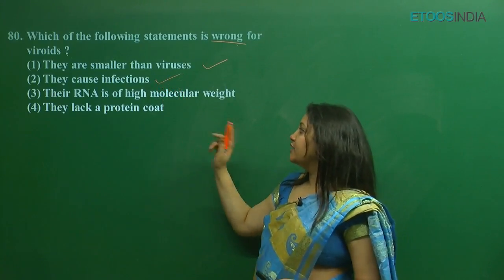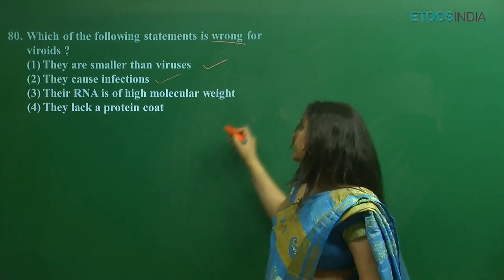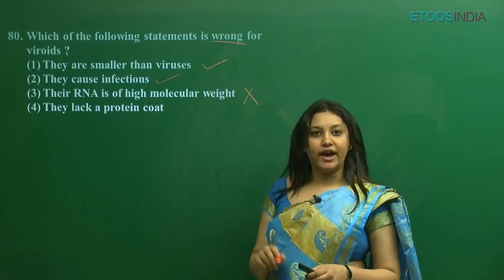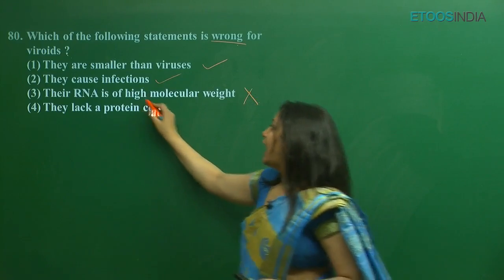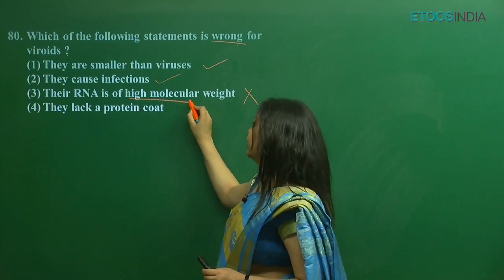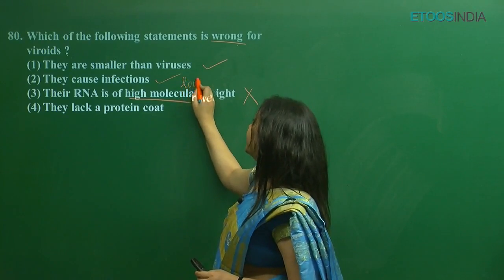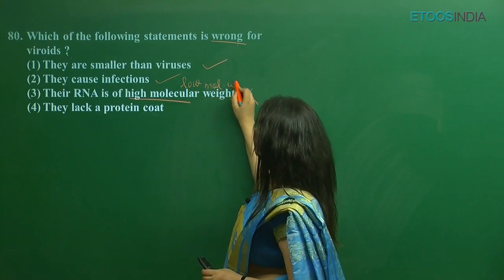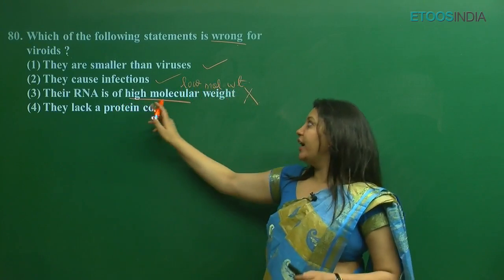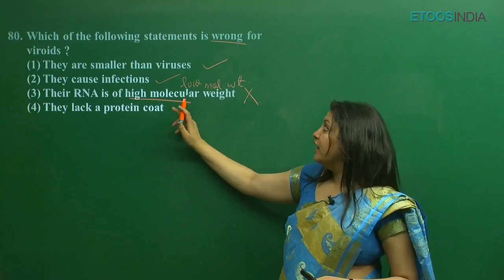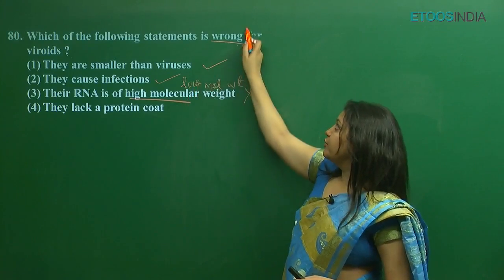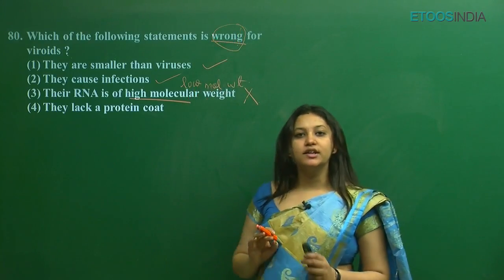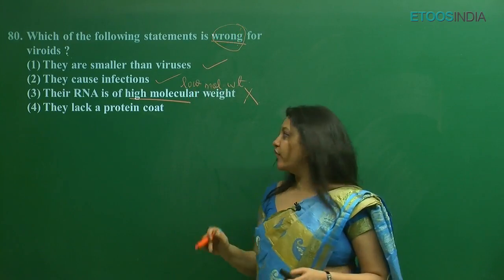The next option is: their RNA is of high molecular weight. This is the incorrect statement, because the RNA of viroids is not high — it is of low molecular weight. Their molecular weight is low, not high. That is why the question asks for the wrong statement, and third is the correct option regarding this question.